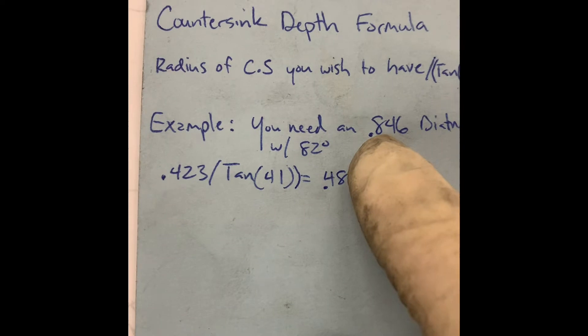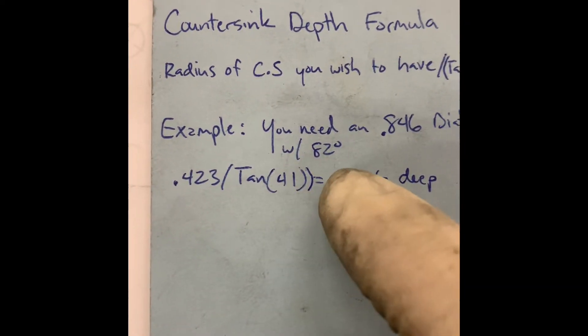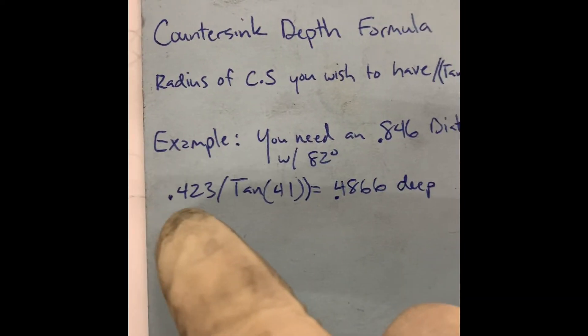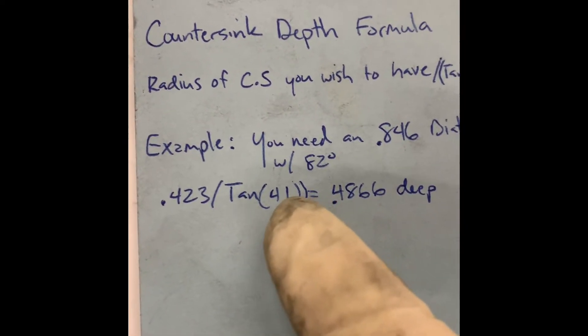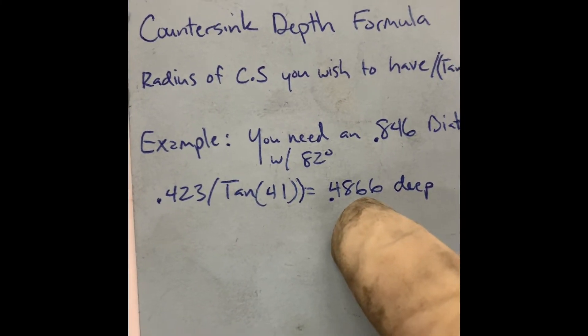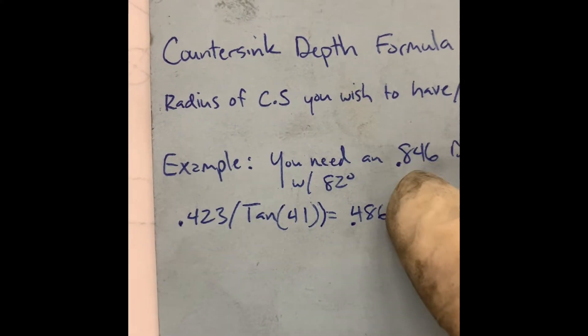But my example is if you need an 0.846 diameter with an 82 degree, you take half of that, which is 0.423, divided by the tangent of 41. And you would need to go this deep in the program to theoretically hit that number.